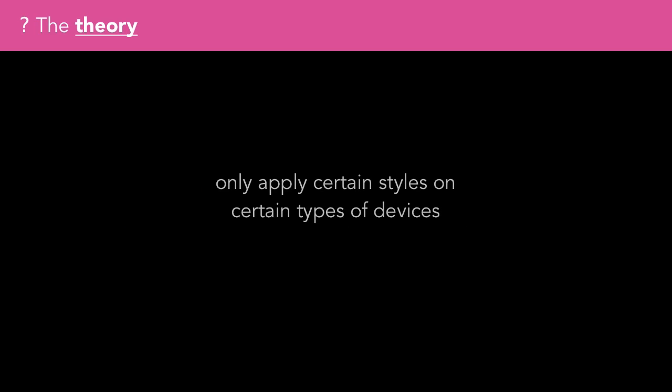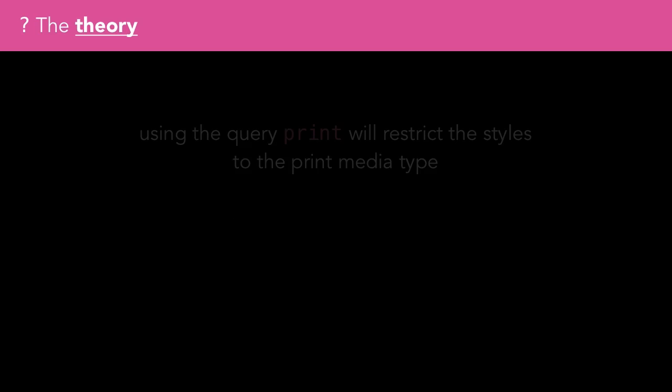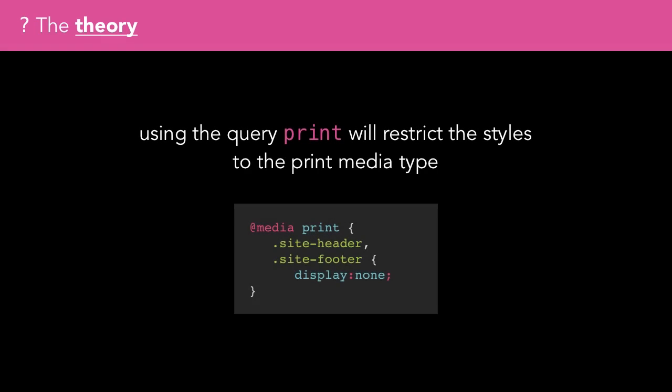Sometimes we only want certain styles to apply on certain types of device, or when certain characteristics of the device are true. For example, we might want to remove the header and footer when printing out a web page. Using the query 'print' will restrict the styles of the at-rule to the print media type.